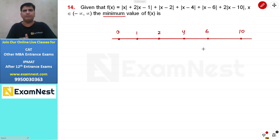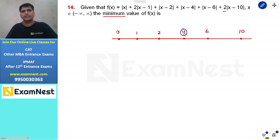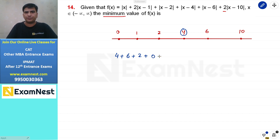We need the minimum, which occurs near the middle value. Focus on x = 4 as the middle value — it is close to both 6 and 10. Putting x = 4: |4| = 4, 2|4−1| = 2×3 = 6, |4−2| = 2, |4−4| = 0, |4−6| = 2, 2|4−10| = 2×6 = 12. Adding: 4 + 6 + 2 + 0 + 2 + 12 = 26. So one candidate value is 26.